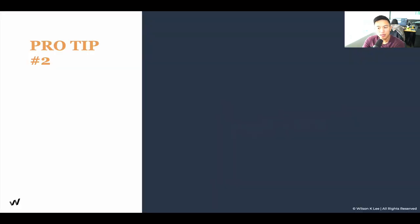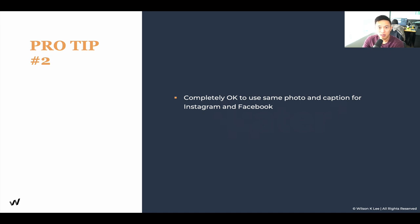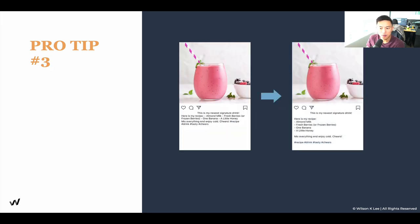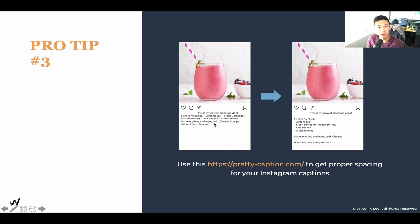Pro tip number two: it is completely okay to use the same photo and caption for both Instagram and Facebook. A lot of people ask whether they need to create separate content for each platform. Not everyone on your Instagram is on your Facebook and vice versa, which is why it's okay to use the same content. I would recommend scheduling the same post either a day or even a week apart so it prevents people from seeing the same thing if they follow both platforms. Pro tip number three: oftentimes when you're creating captions, the formatting can be off and very difficult to read. Check out the link below to properly space out your captions.